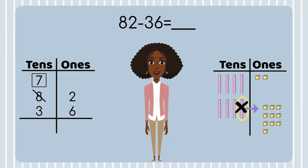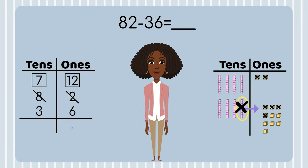Now I have one less ten. When I put the ten into the ones place, it breaks down into ten ones. Now this is better — I have enough to subtract. I'll subtract six ones: one, two, three, four, five, six. I have six ones left. I'll put a six in the ones place.